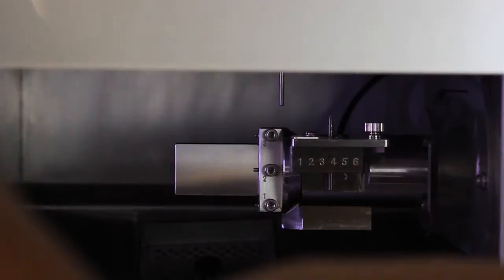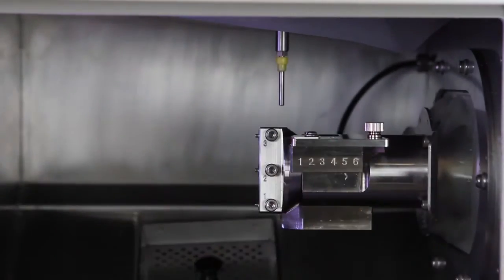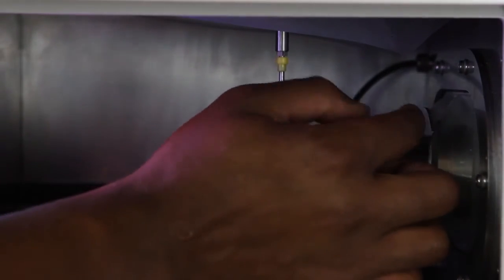Open the front cover and remove the automatic correction jig from the mounting part. Then, remove the detection pin and ATC magazine correction jig from the top of the rotary axis and close the front cover.